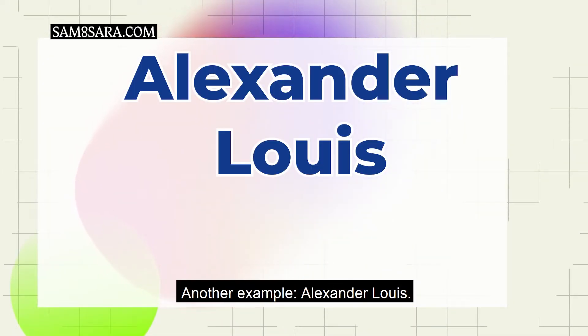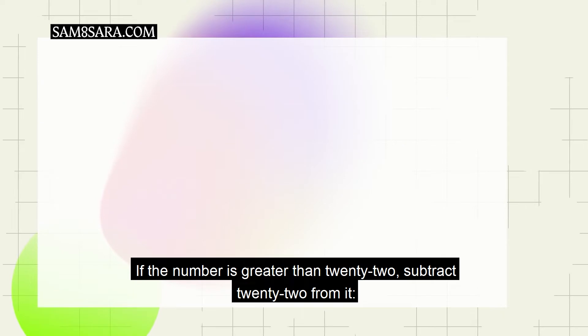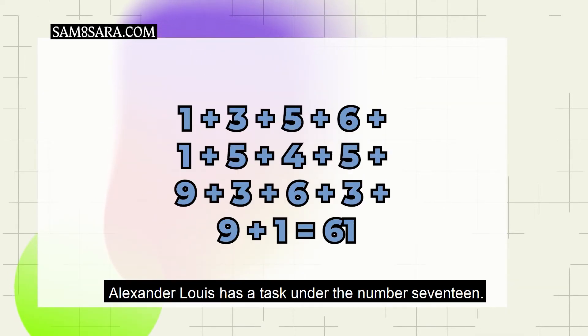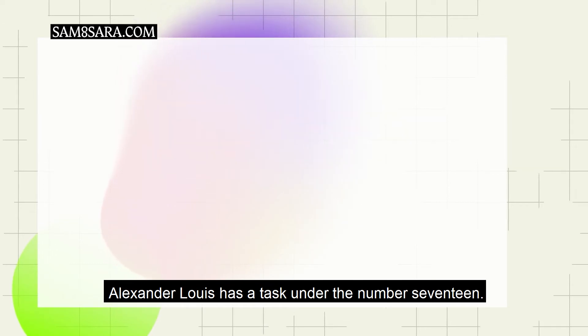Another example, Alexander Louis. If the number is greater than 22, subtract 22 from it. Alexander Louis has a task under the number 17.